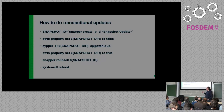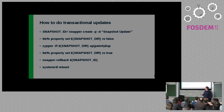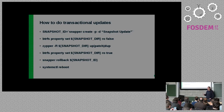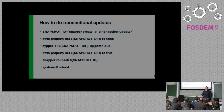How to do transactional updates in the script? It's quite simple. With Snapper I create a new snapshot and save the ID. I set it with BtrFS tools as read-only false so I can write to it. I call Zypper, telling it where to find the snapshot to update. I do a Snapper rollback so the new snapshot will be active. Then at a convenient time I reboot and I'm done. After the reboot, my patches are applied and I still have the old snapshot.